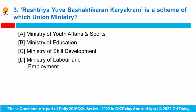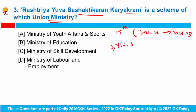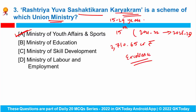Question number 3: Rajshree Hiva Sashakti Karan Karikram is a scheme of which Union Ministry? This has been extended over the 15th Finance Commission cycle, that is 2021-22 up to 2025-26, at an outlay of 2,710.65 crore rupees. This Karikram is the flagship central sector scheme of the Ministry of Youth Affairs and Sports, with beneficiaries being youth in the age group of 15 to 29 years. The objective is to motivate youth to strive for excellence and use their energy for nation building.